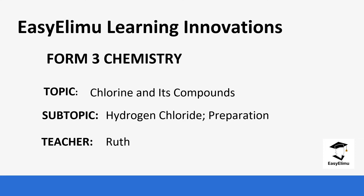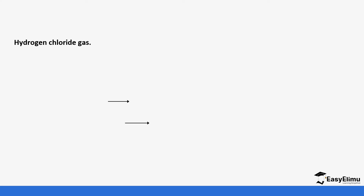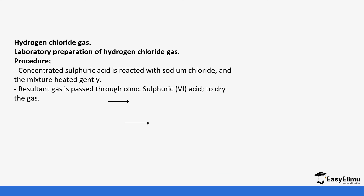Today we are going to be learning about chlorine and its compounds, specifically looking at hydrogen chloride and its preparation. We will look at the preparation of hydrogen chloride gas, and later on we will look at how the acid is produced at scale. Hydrogen chloride is produced in the laboratory by the reaction of concentrated sulfuric acid with a salt.